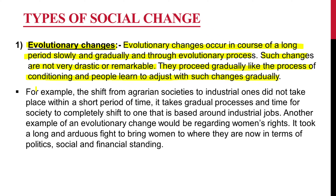For example, the shift from agrarian societies to industrial ones did not take place within a short period of time — it takes gradual processes and time for society to completely shift to one based around industrial jobs. Another example of evolutionary change is women's rights: it took a long and arduous fight to bring women to where they are now in terms of politics, social, and financial standing.